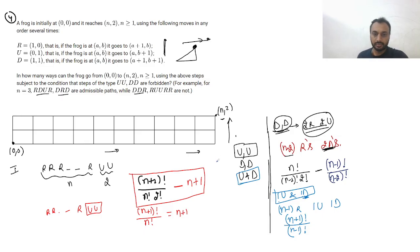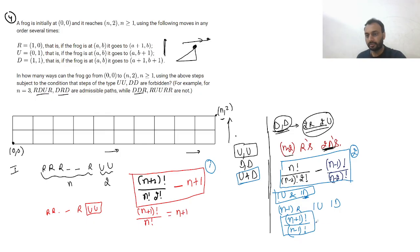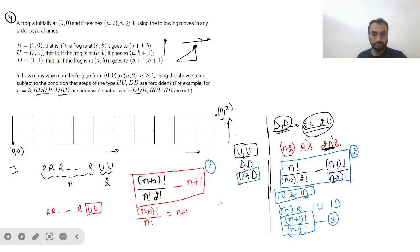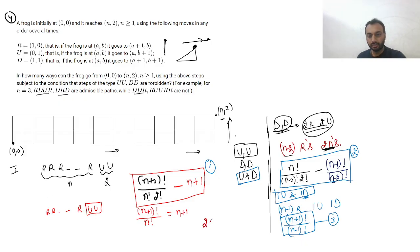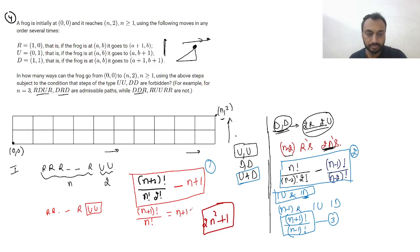Now we add all three cases together. If you simplify and add them, you get the final answer: 2n² + 1. That is the answer to this question.